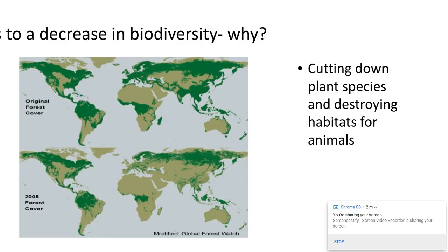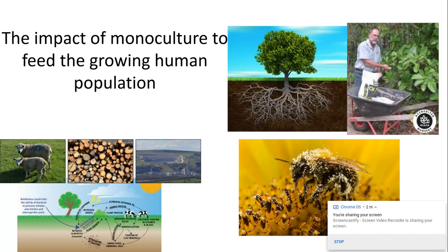Cutting down plant species also has wider consequences. As we looked at a couple of videos ago, plants could be a source of medicine, so by cutting them down we're also decreasing our chances of finding new medicinal purposes for plants. By removing the roots of trees through deforestation for crops, you're also causing soil erosion because the roots aren't in place to hold the soil there.